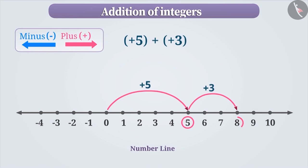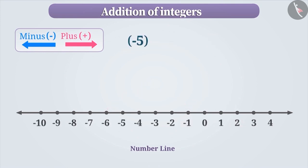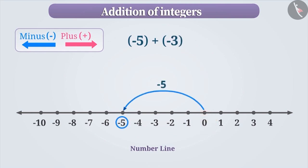Similarly, if we have to find the value of minus 5 plus minus 3, move 5 steps towards the left of 0. And since the sign of the second integer is negative, move 3 steps again towards the left of the first integer. We now arrive at minus 8, which is the result of minus 5 plus minus 3.